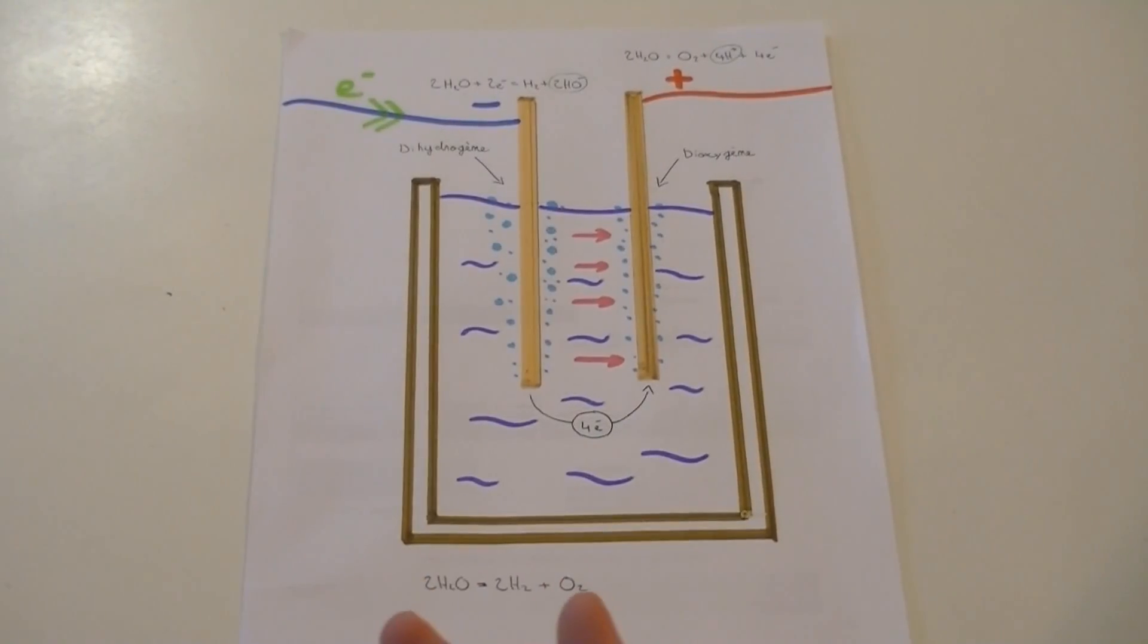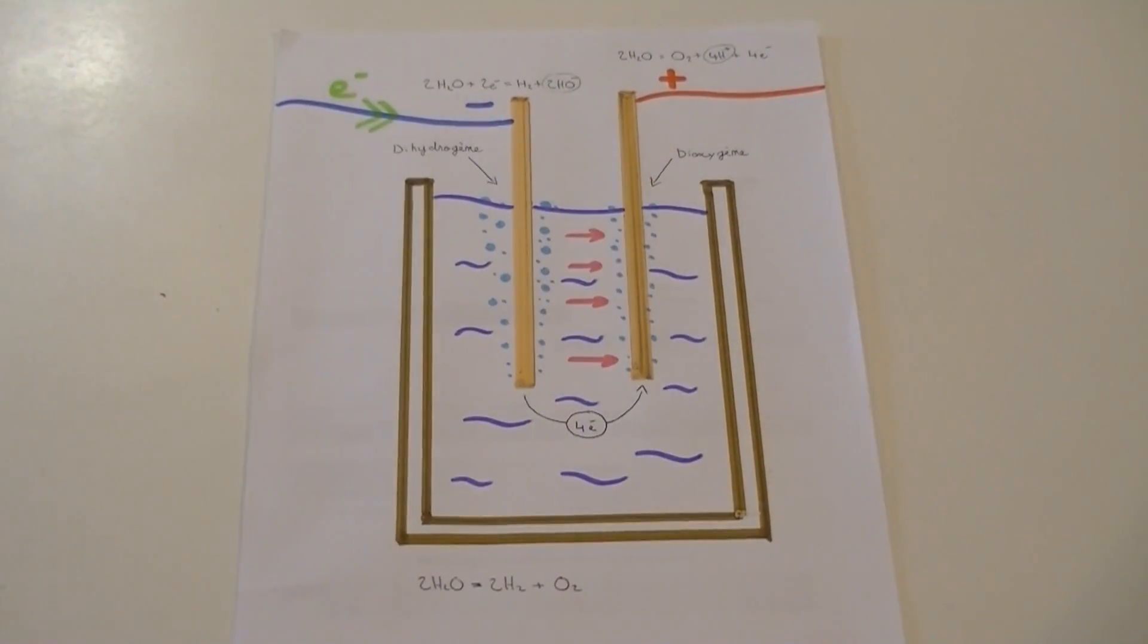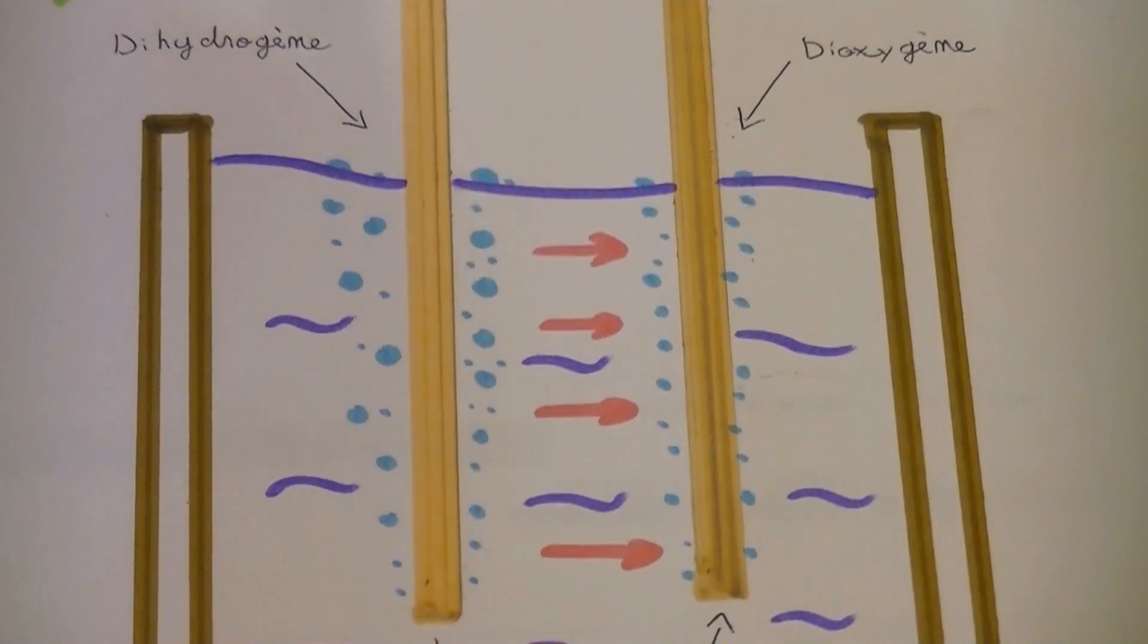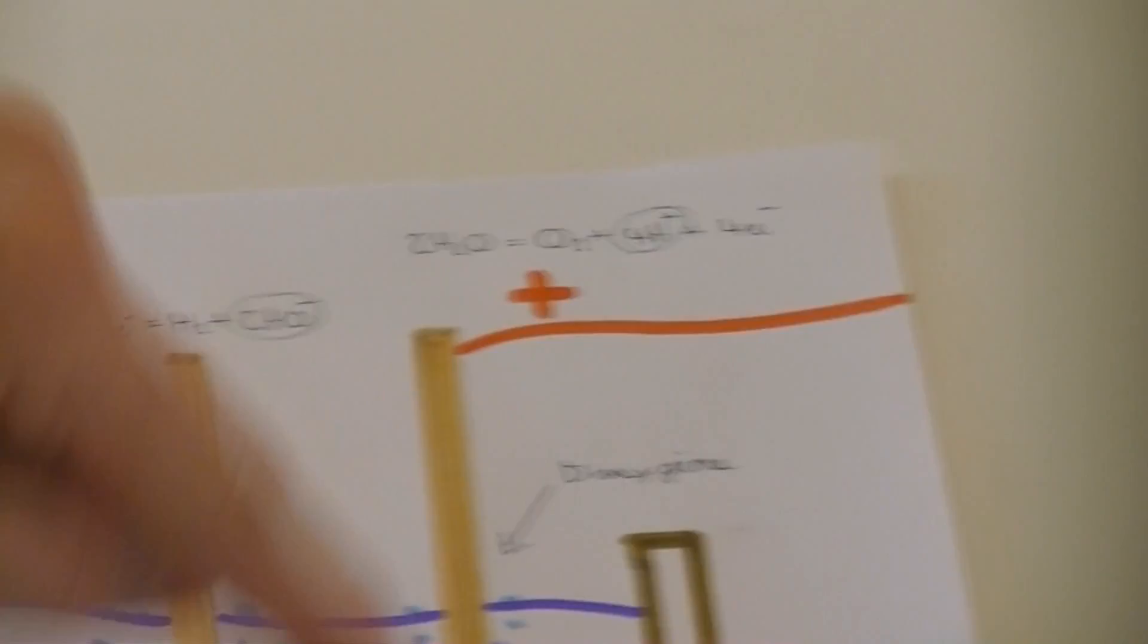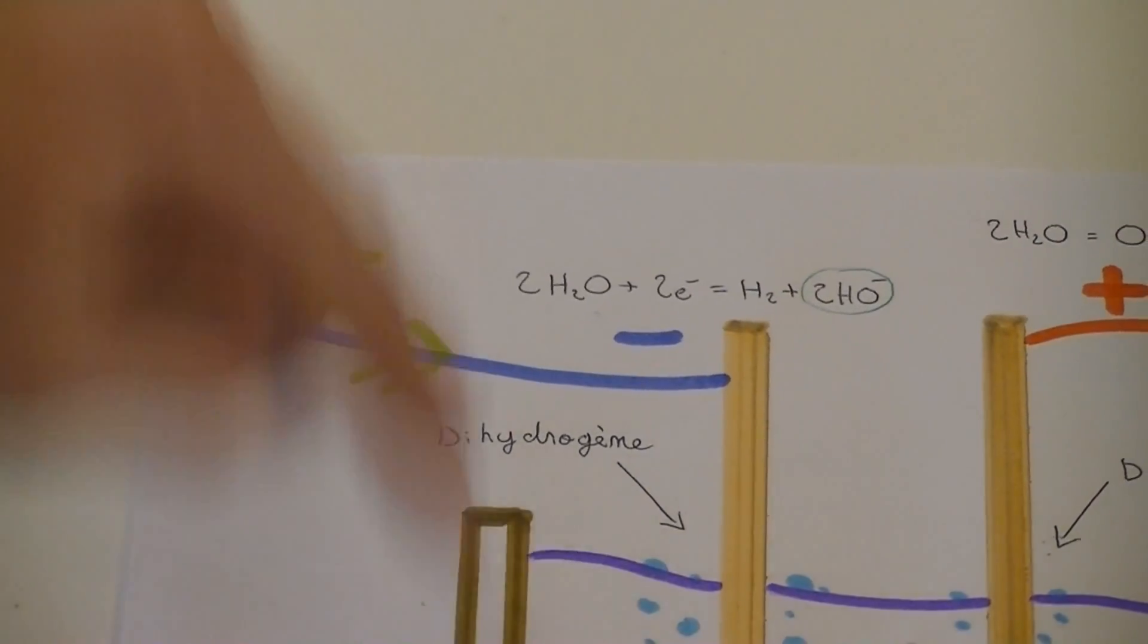What happens at the atomic scale? To simplify, picture each cell containing only 2 zinc plates. A chemical reaction takes place around each of those plates. According to convention, electrical currents move from positive to negative. But the electrons move from negative to positive.